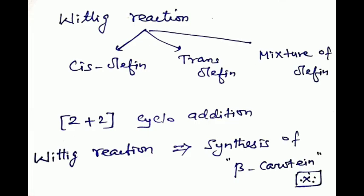Some Wittig reactions give the cis-olefin (Z-olefin), some give the trans-olefin, and others give a mixture of olefins. Ylides containing a stabilizing group such as NO₂ or CHO give a trans-olefin, while ylides not containing a stabilizing group give a cis-olefin or a mixture of both olefins.